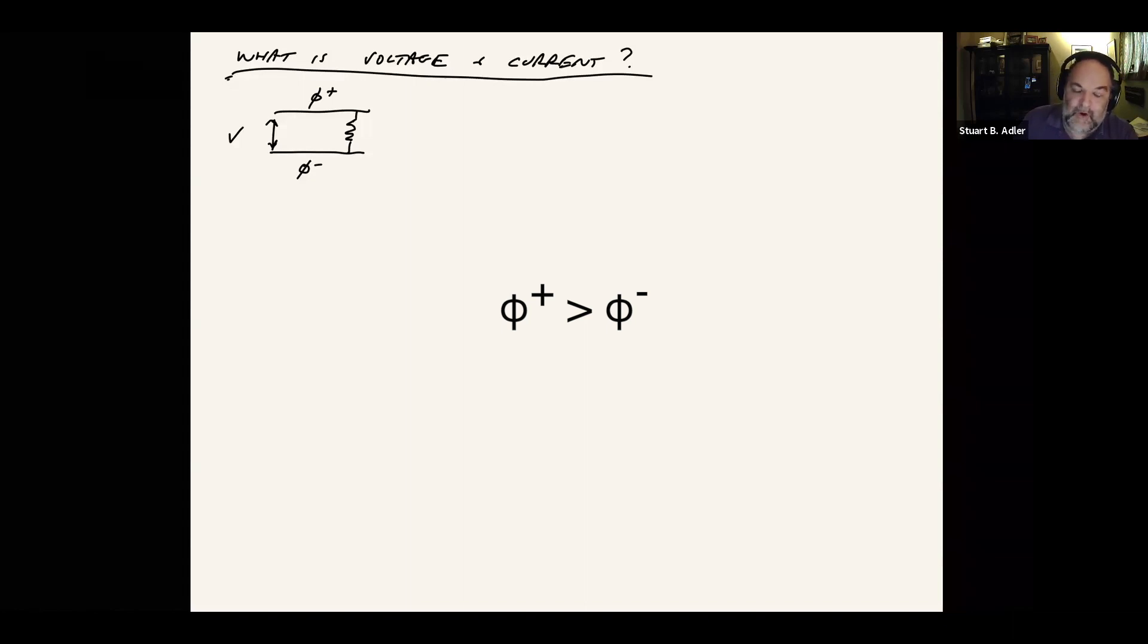Phi one is greater than phi two, so current wants to flow from the upper wire to the lower wire, and that gives the driving force for current to flow. Current flows from plus to minus by definition. Current is defined as flow of positive charge, potential is defined as energy of positive charge. So we go from high to low energy, we flow current from phi plus to phi minus.